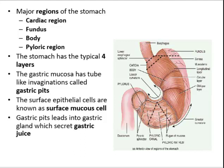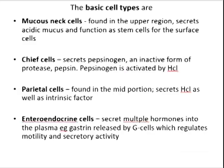The convex lateral surface of the stomach is the greater curvature, while the concave medial surface is the lesser curvature. Hanging from the curvatures are the omenta. The lesser omentum is a mesentery that connects the lesser curvature of the stomach to the liver. The greater omentum is a fold of mesentery that drapes from the inferior surface of the greater curvature, covers the small intestine, and attaches to the transverse colon.